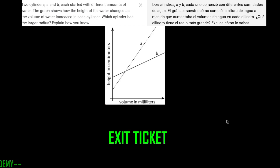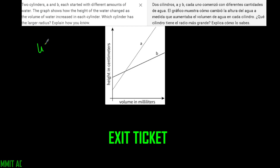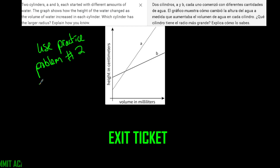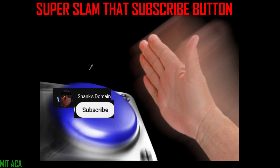Once you've gotten that one done, the exit ticket is as follows. Make sure you're using problem number two from the practice problems — two cylinders A and B each started with different amounts of water. The graph shows how the height of the water changed as the volume increased. Which cylinder has a larger radius? Explain how you know. Use practice problem number two on the back. Make sure you can check with me and ask questions as you need to. As always, super slam that subscribe button.